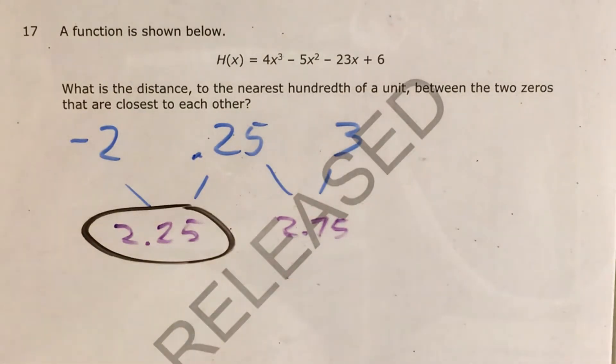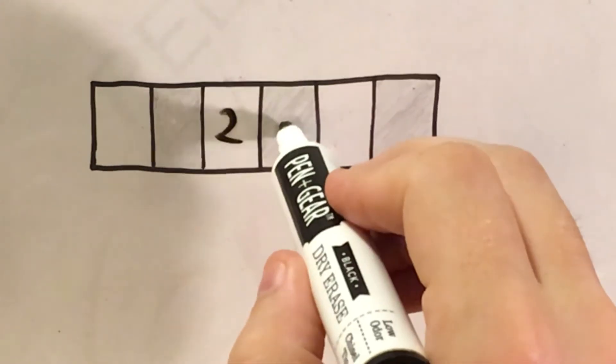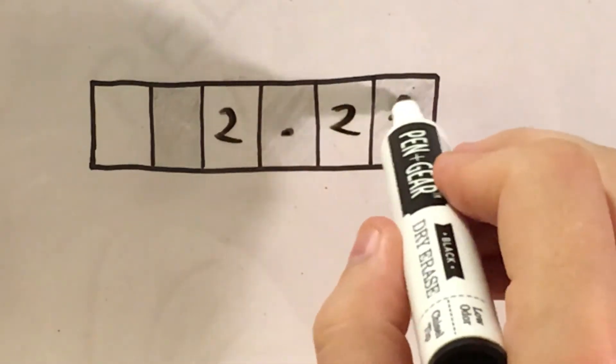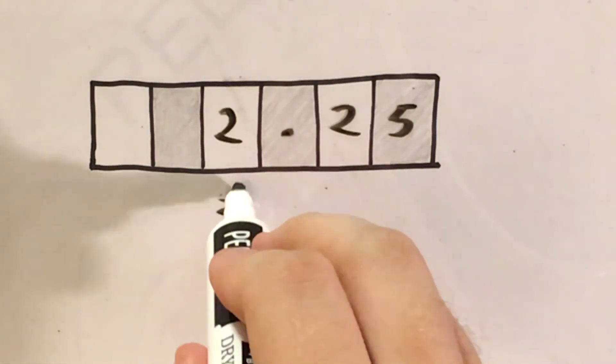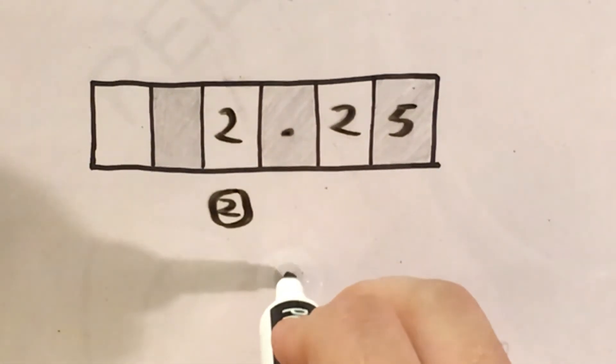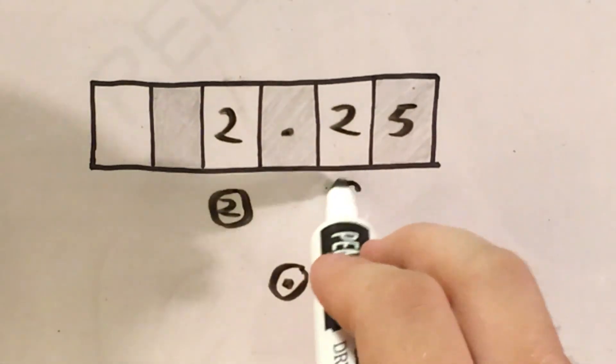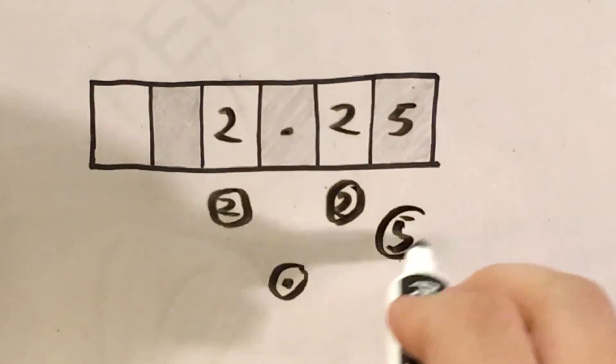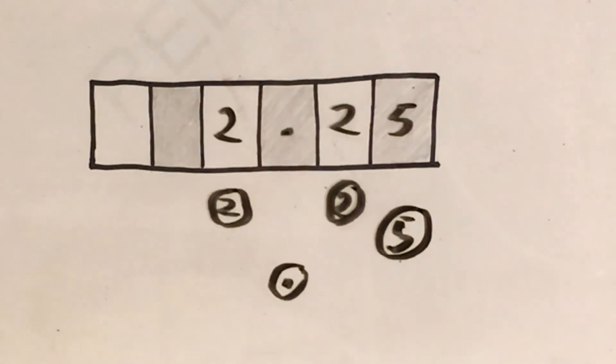I need to write it into my gridded response. I'm going to give my two decimal places and each decimal point their own box. I find my 2, bubble under my 2 and bubble that in. I find my decimal point, bubble under my decimal point. 2, bubble under the 2. 5, bubble under the 5. That's how I write my answer to this question.